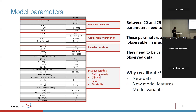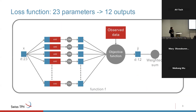We need to calibrate to a set of data collected from the literature and field studies. We also need to calibrate every time we add new data, when we add new model features, or when we want to calibrate model variants with a different set of equations. In total, we have between 20 and 25 parameters to recalibrate. To do this calibration, we need a way — given a set of parameters — to tell us how good that set is.